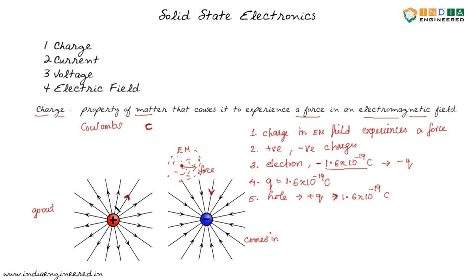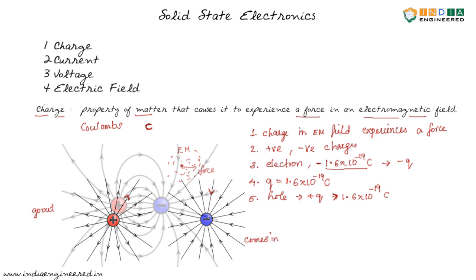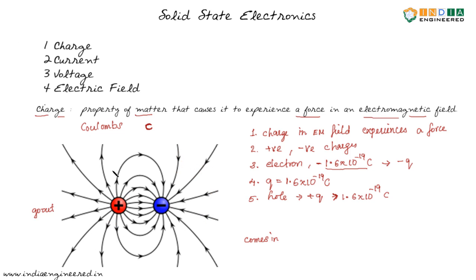This is good to know, and we will come back to it when we talk about electric field. What if we have a positive charge adjacent to a negative charge? The positive charge has its own field lines and the negative charge has its own field lines, and they interact with each other. These are imaginary lines — if you place a charge there, it will experience some force.